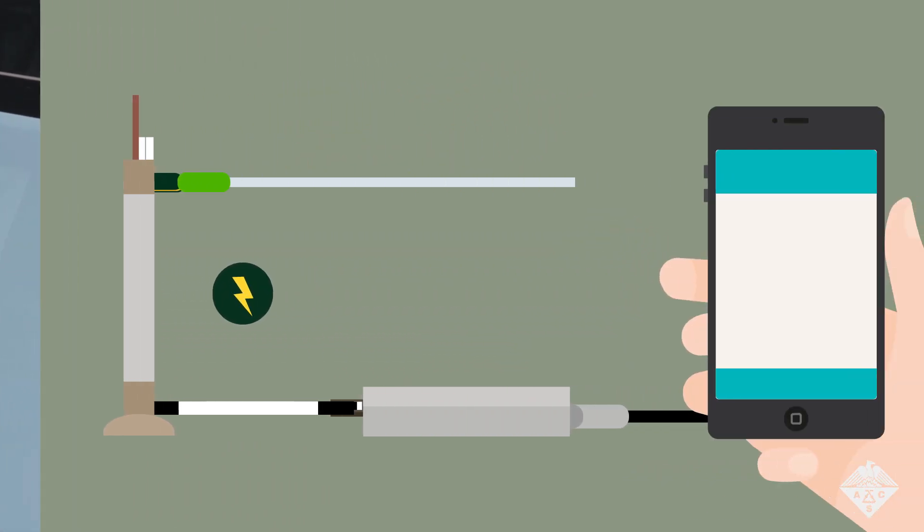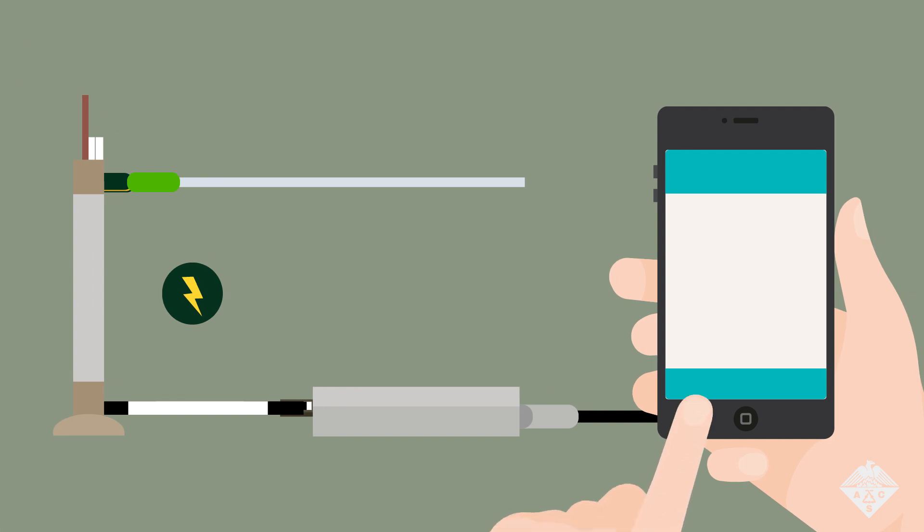The test can be done in less than 3 minutes and is accurate for THC levels as low as 100 picograms per milliliter. That's more than sensitive enough to detect typical THC levels after smoking.